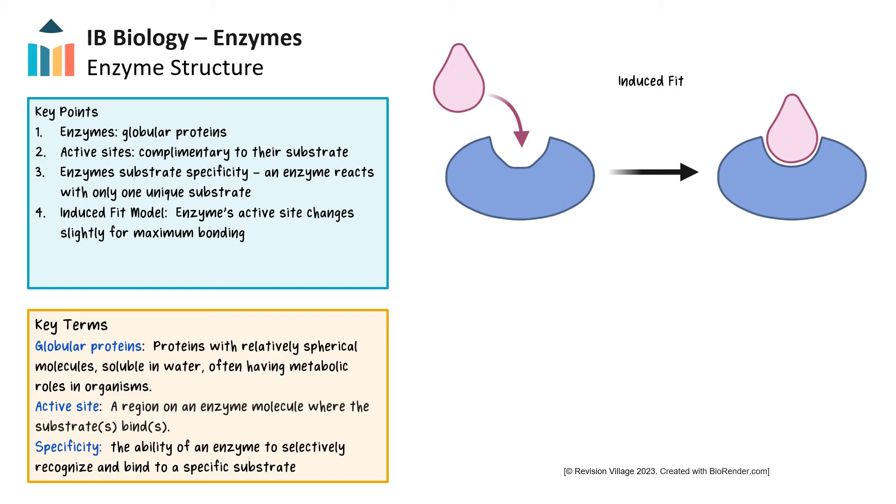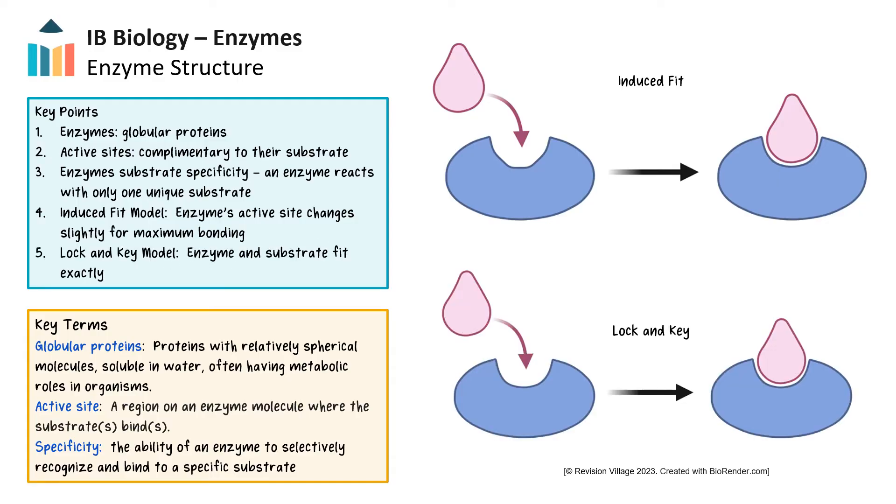When a substrate binds to an enzyme, both may change shape slightly to bring the substrate into position to undergo the reaction in a model known as induced fit. The slight shift in the shape of the enzyme and substrate may also be thought of as the glove and hand model, where the glove or enzyme is shaped for the hand, but both will flex to move into position. The original model of enzyme and substrate interaction is known as the lock and key model, where the active site of the enzyme matches the substrate exactly, and neither changes shape upon binding. It appears that most enzymes follow the induced fit model rather than the lock and key.